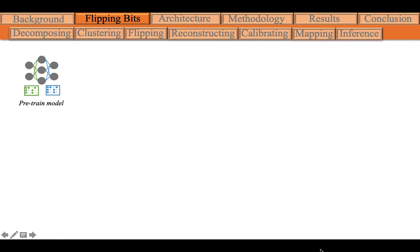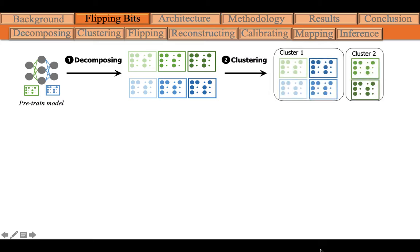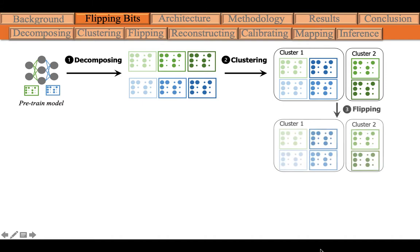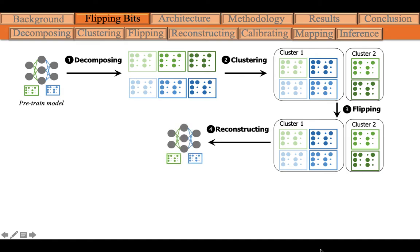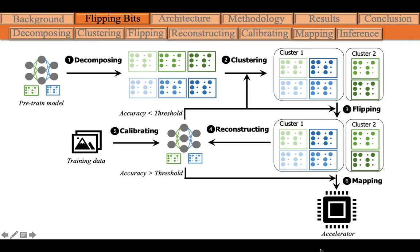Next, let's take a look at the workflow of B-Flip. Given a predefined, pre-trained model, we first decompose each weight matrix into bit matrices. Then we group similar bit matrices together into clusters. The bit matrices in the same cluster will flip their bits to reduce their distance to the centroid matrix of that cluster. A modified DNN model will be obtained by combining these flipped bit matrices. Then we calibrate this new model with the training data. If the training accuracy is less than a predefined threshold, we will regroup all the bit matrices into more clusters and perform the flipping and reconstructing steps again. If the training accuracy reaches the predefined threshold, we proceed to the mapping stage to deploy the weights onto the accelerator for inference.